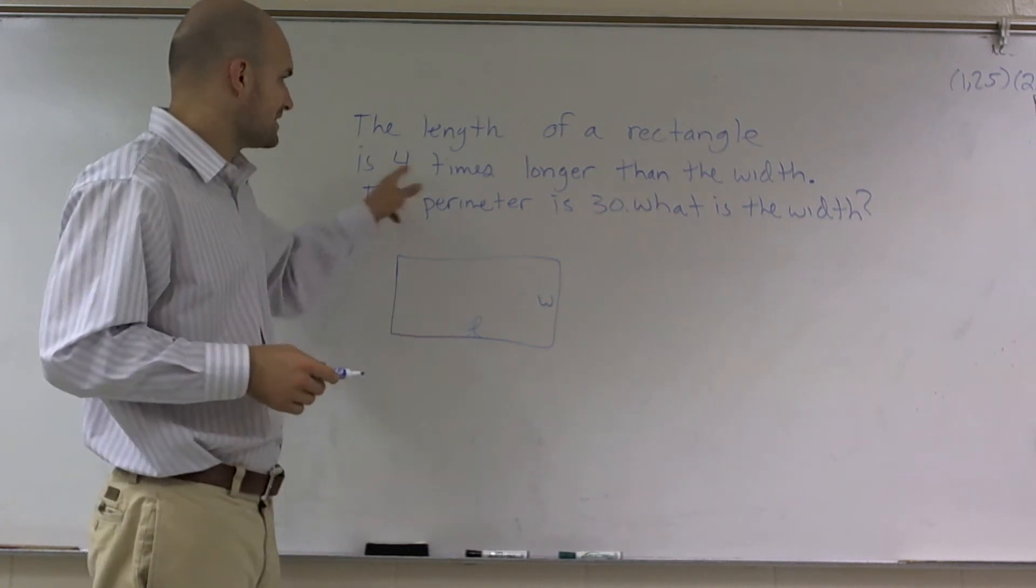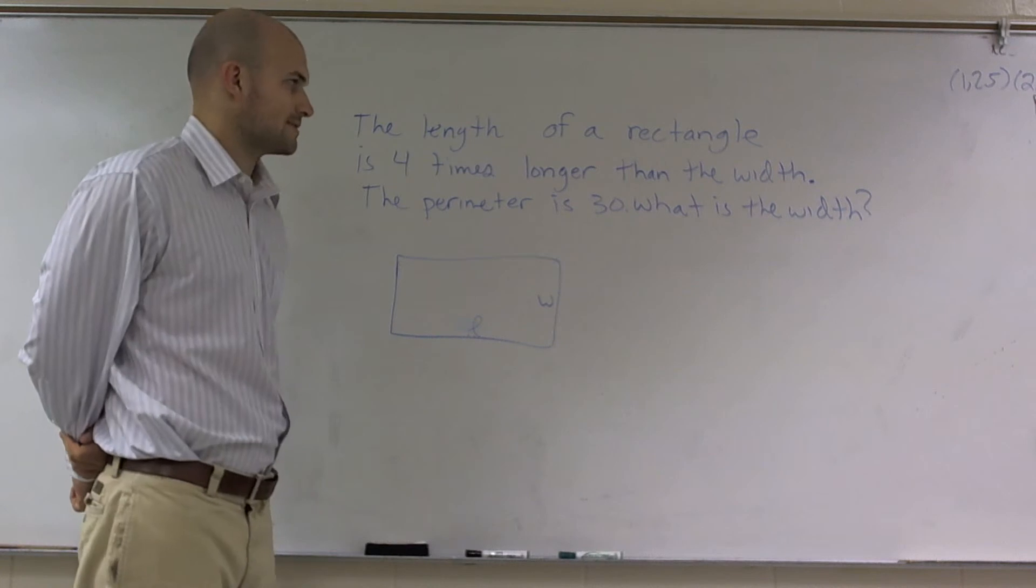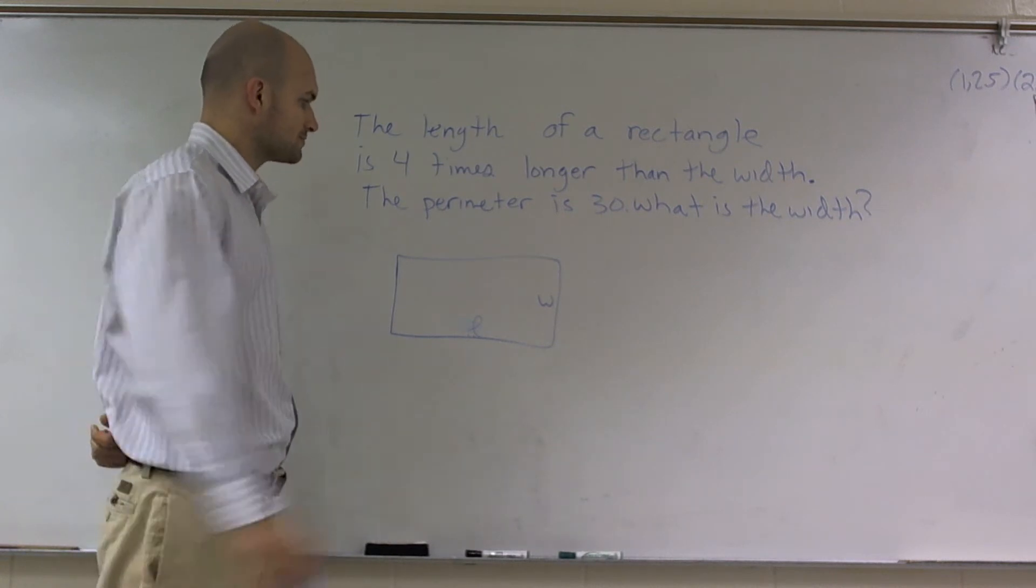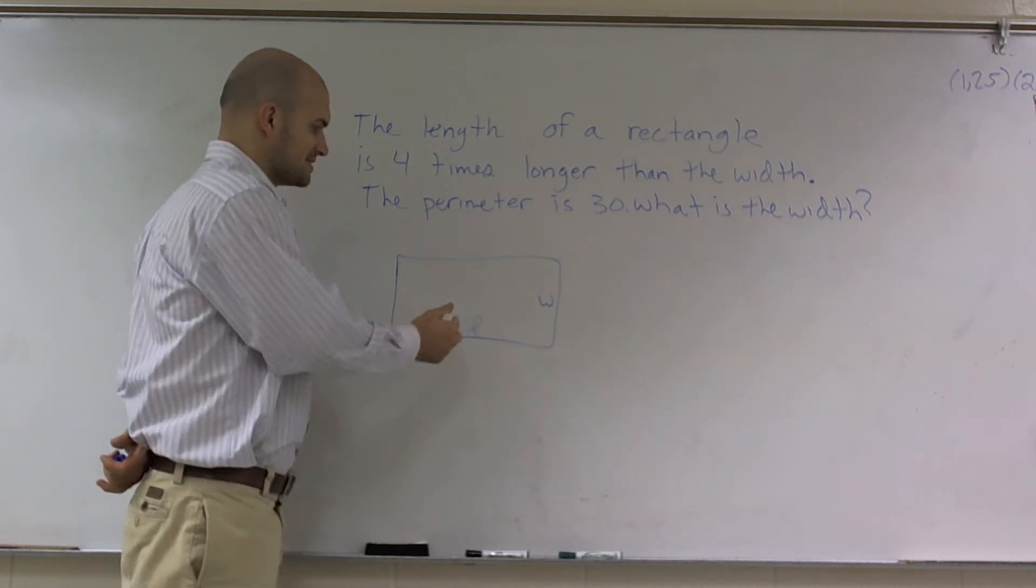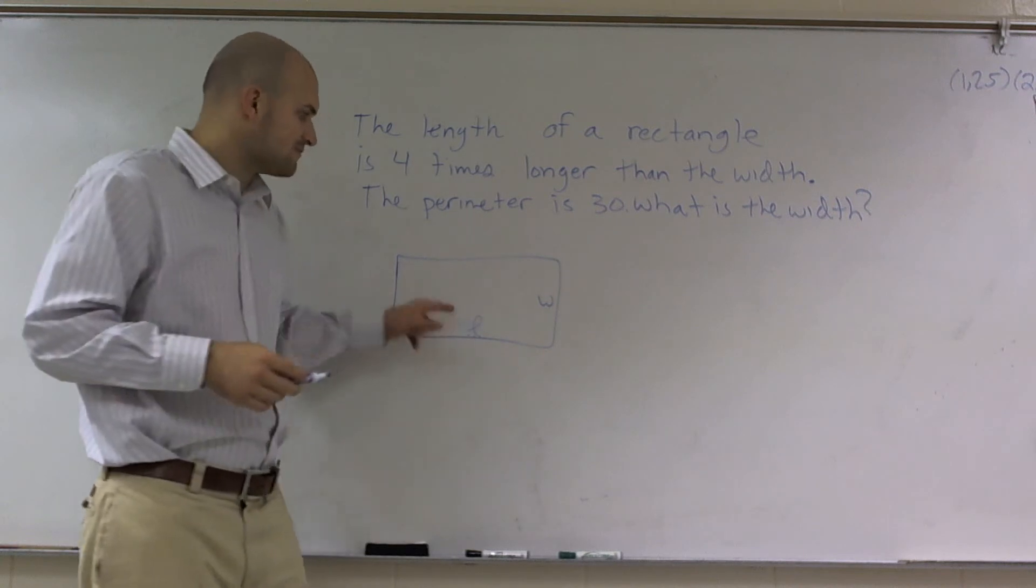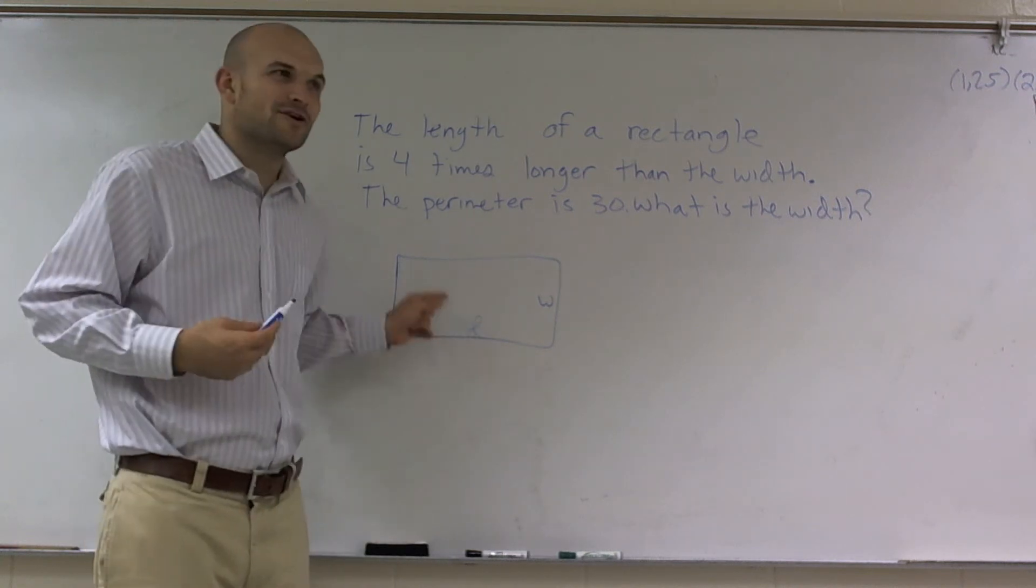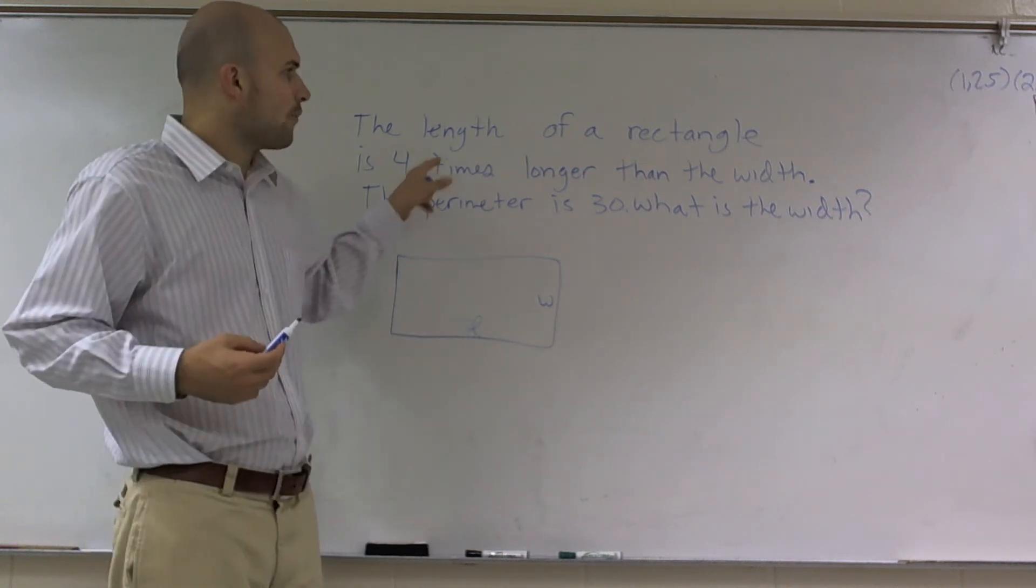So it says the length is four times longer than the width, right? So now I could just say, oh, four times w. But that means four times the length. I don't want to do four times the length. I want to do four times the width.